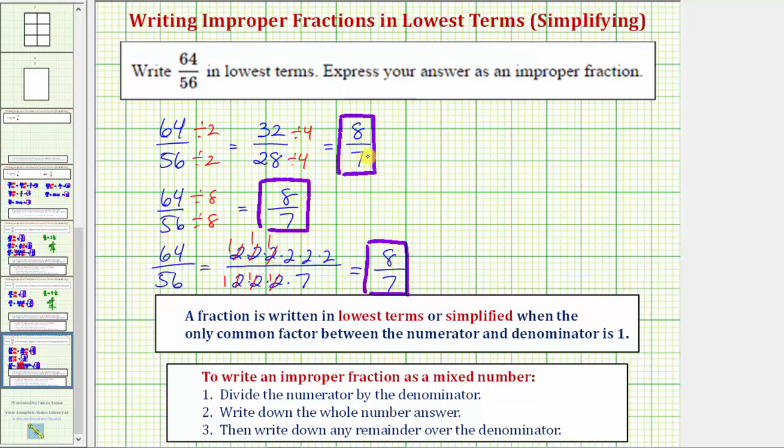8/7 is an improper fraction because the numerator is greater than or equal to the denominator. The steps to write an improper fraction as a mixed number are shown here. The main thing to remember is that a fraction bar means division, so 8/7 equals 8 divided by 7.